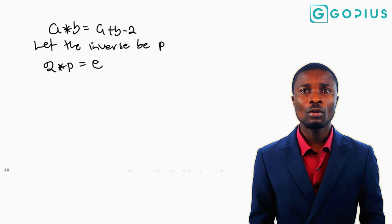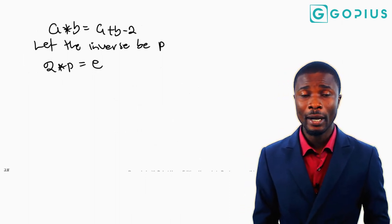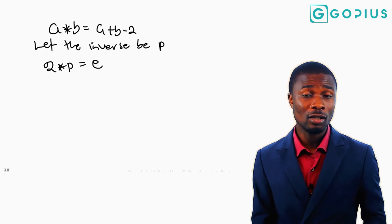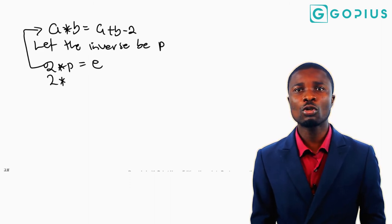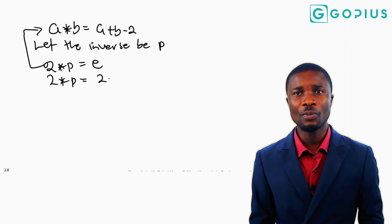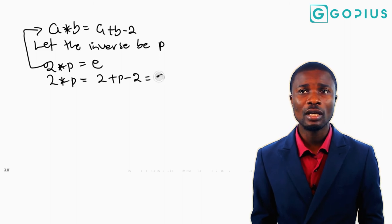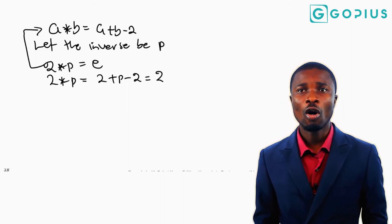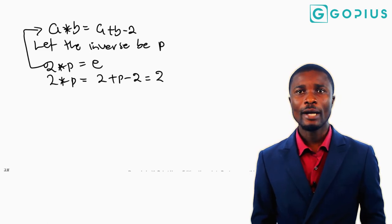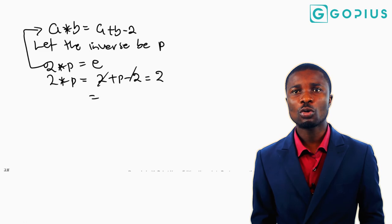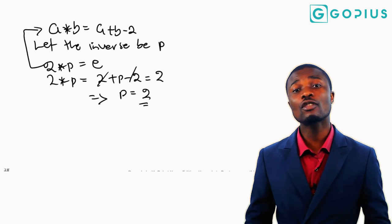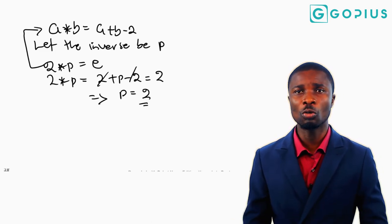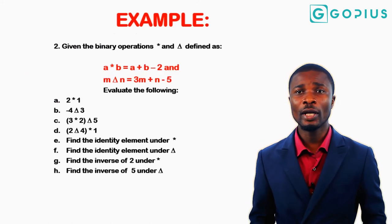So 2 star p equals 2, where 2 is the first operand replacing a and p is the second replacing b. We get 2 plus p minus 2 equals 2. The two minuses cancel, giving p equals 2. So the inverse of 2 under the star operation is also 2.